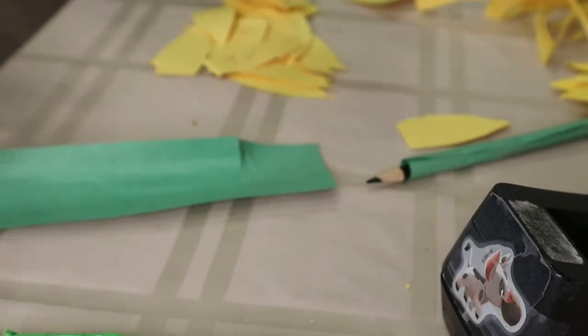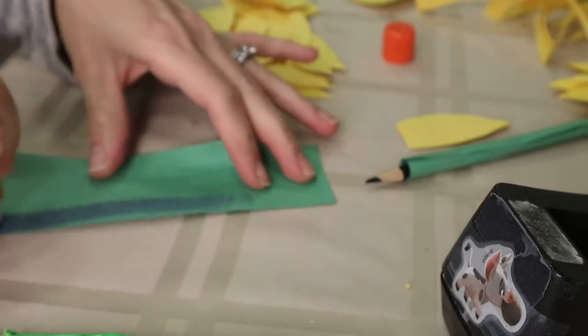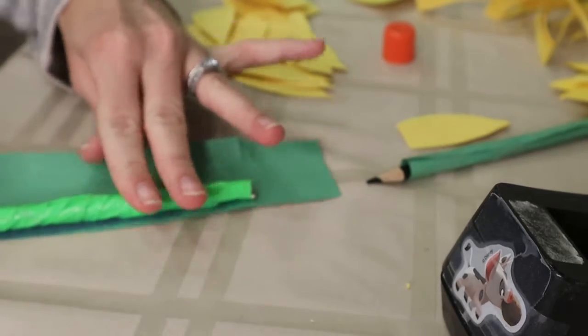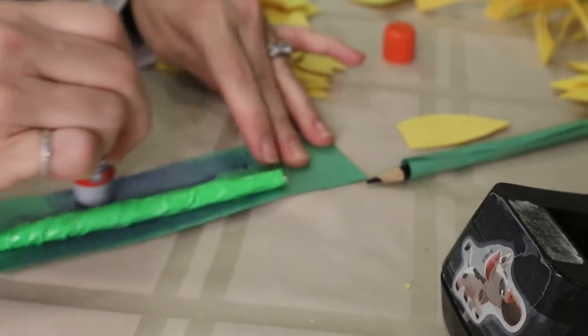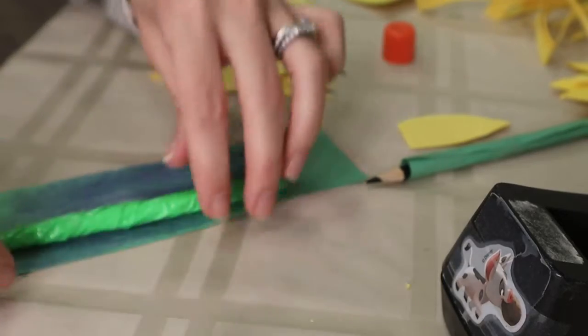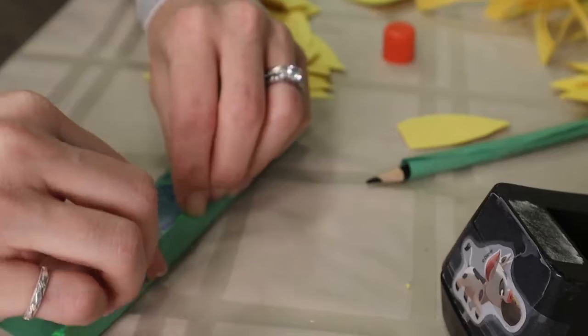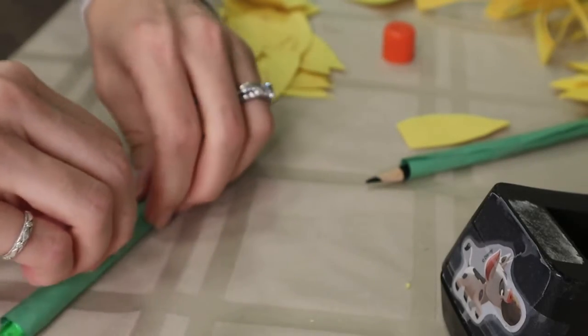And take some glue. You're going to put a little glue on the edge. Like so. Put it all along so that it's glued to your pen or your stick. You're going to wrap your stick like so and secure it.